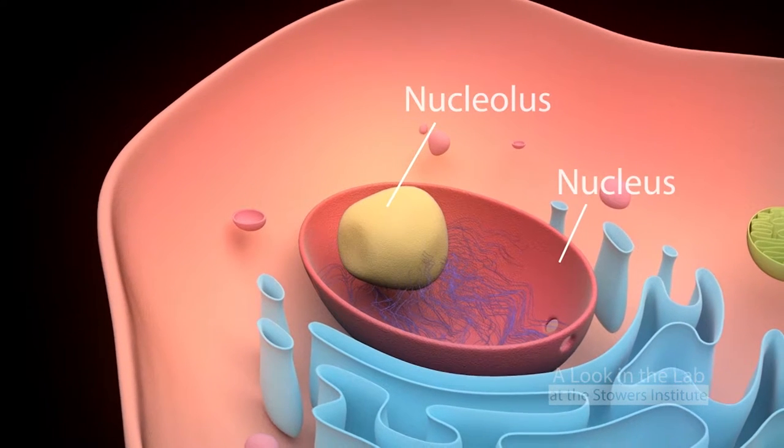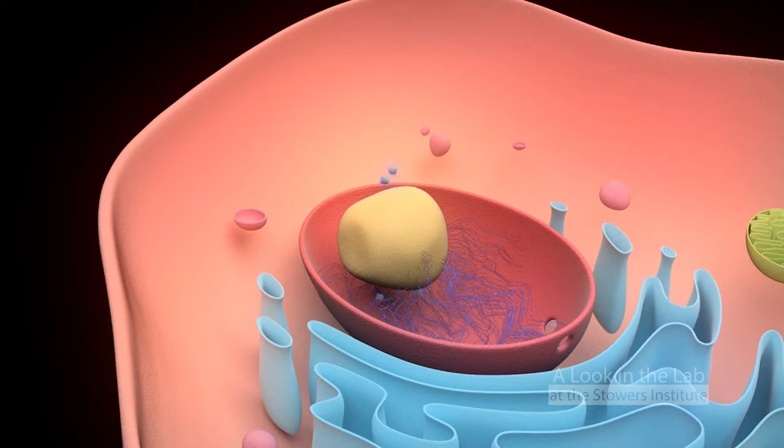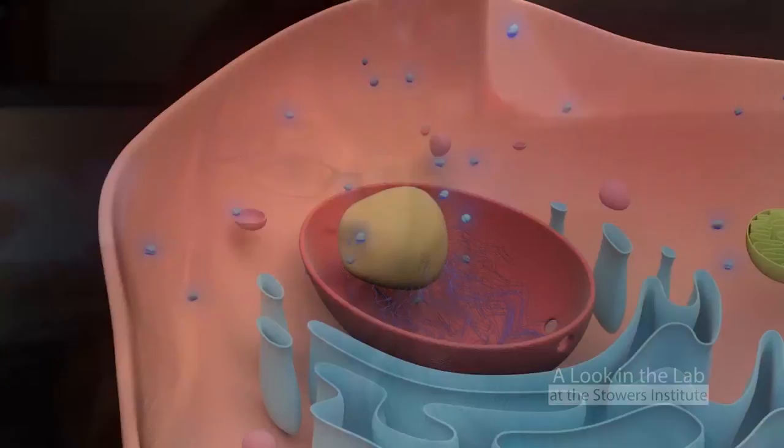The mutations in these proteins that organize the chromosomes turned out to disrupt the formation of the nucleolus. We used budding yeast as a model system to study this. The nucleolus is a substructure within the nucleus. It's the place where ribosomes are made.